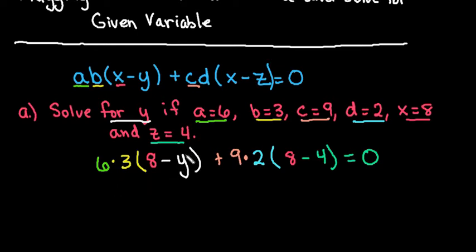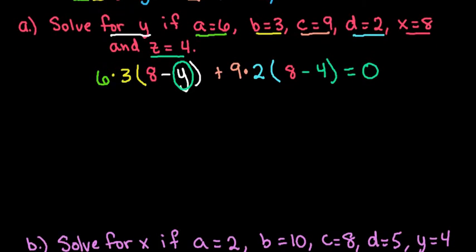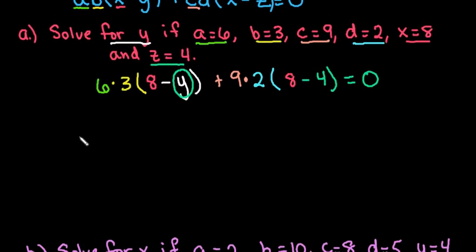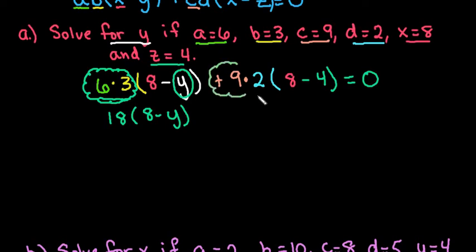So now what we want to do is we just want to get y by itself. Remember our goal is to isolate this y term. So the first thing that we want to do is look for any groups that we might have that we need to simplify and start there. So this 6 times 3 is grouped together. I know that the 8 minus y is in the parentheses, but I want to simplify this part on the outside first. And then I'm going to have to distribute in because I can't actually add the 8 and the y together because they're different terms. So 6 times 3 is 18 times 8 minus y. This second part does not depend on what we did over there, so I'm going to go ahead and simplify this part too.